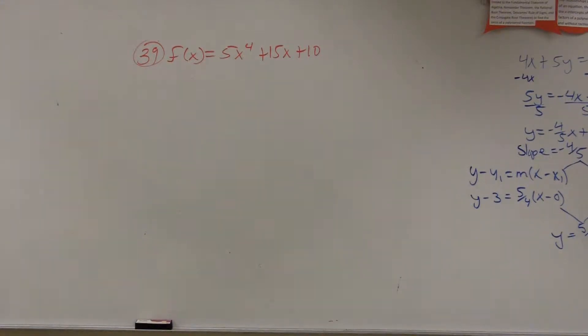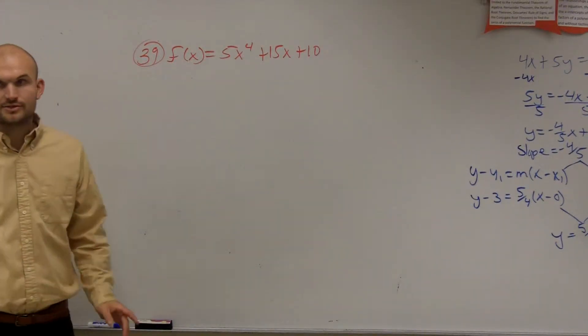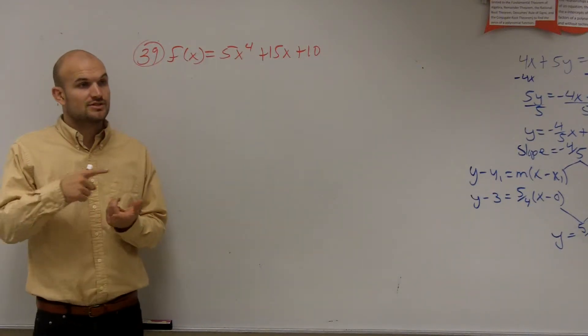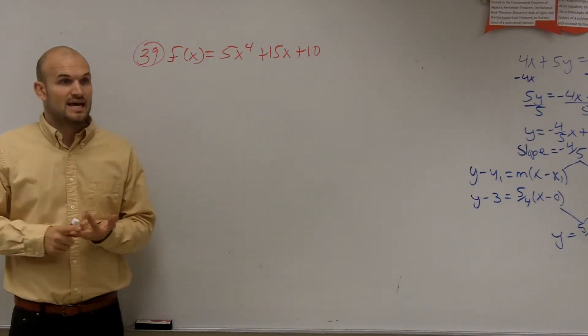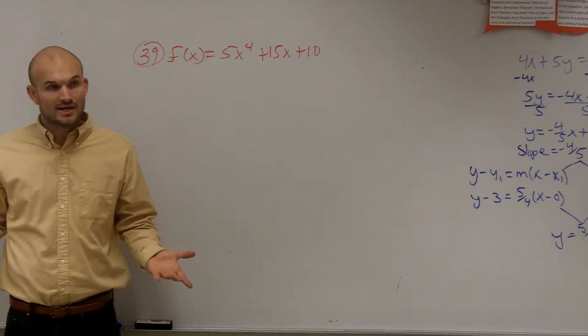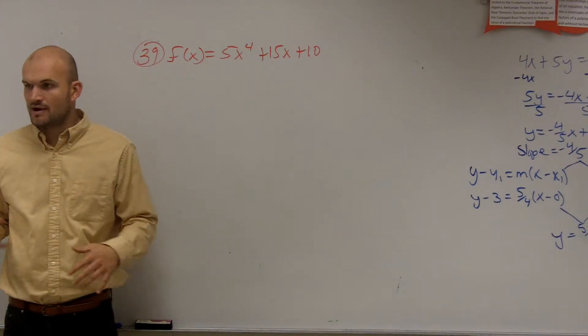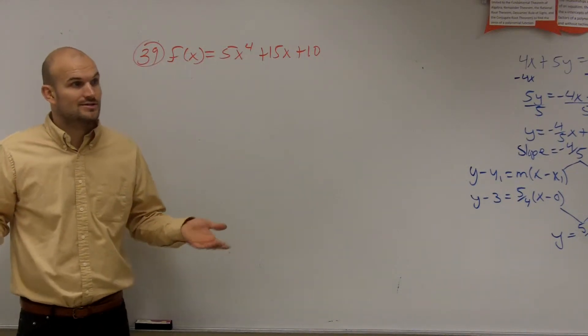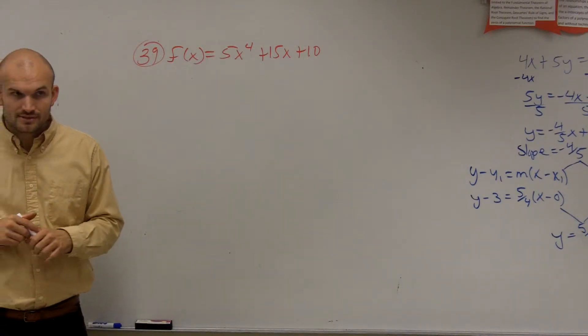So the first fact of this problem, ladies and gentlemen, first of all, what do we need to do? What they're asking us to do is determine the multiplicity, determine the end behavior, and then determine the real zeros. Remember, the real zeros are going to be your x-intercepts. So the first thing let's do, I like to get out of the way, I like to do the easiest part first. I think that kind of makes sense, right? So let's determine what the end behavior is.